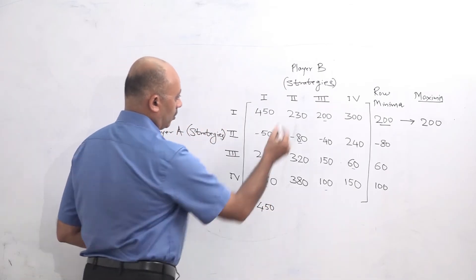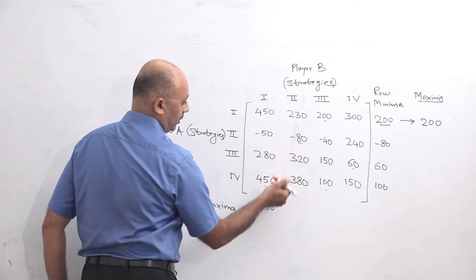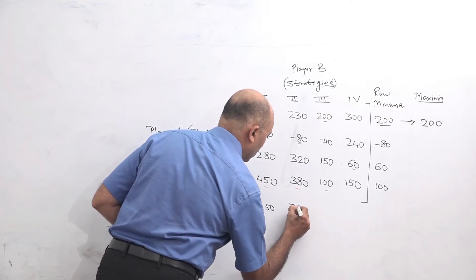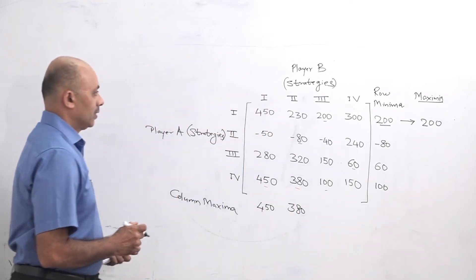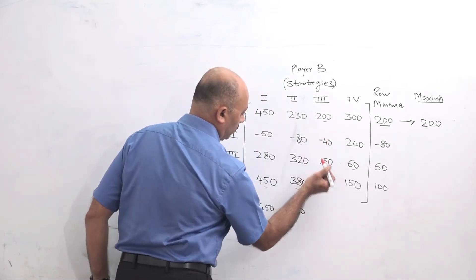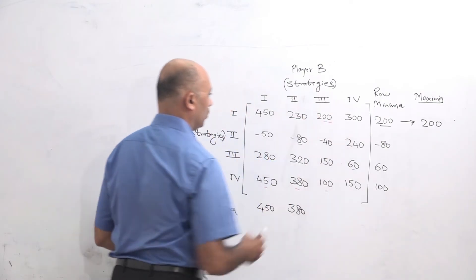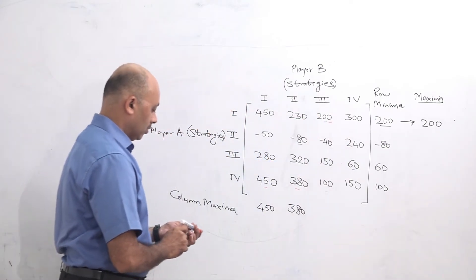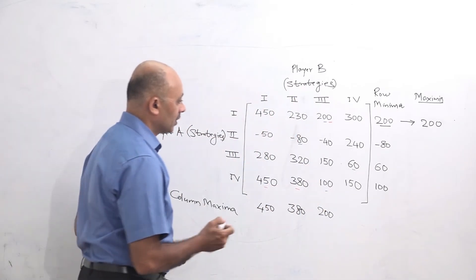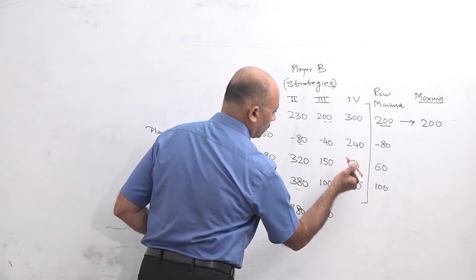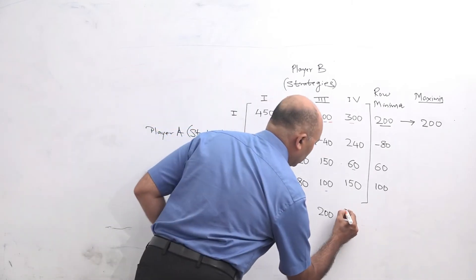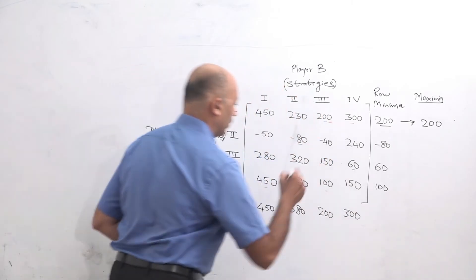Second column: 230, minus 80, 320, 380. The highest value is 380, so the second column maxima is 380. Third column: 200, minus 40, 150, 100. The maximum value is 200. Fourth column maxima is 300.